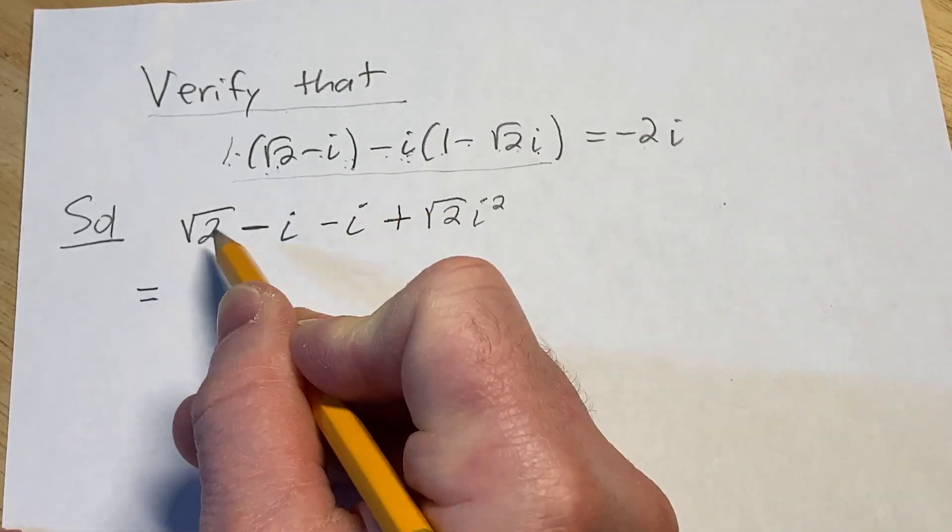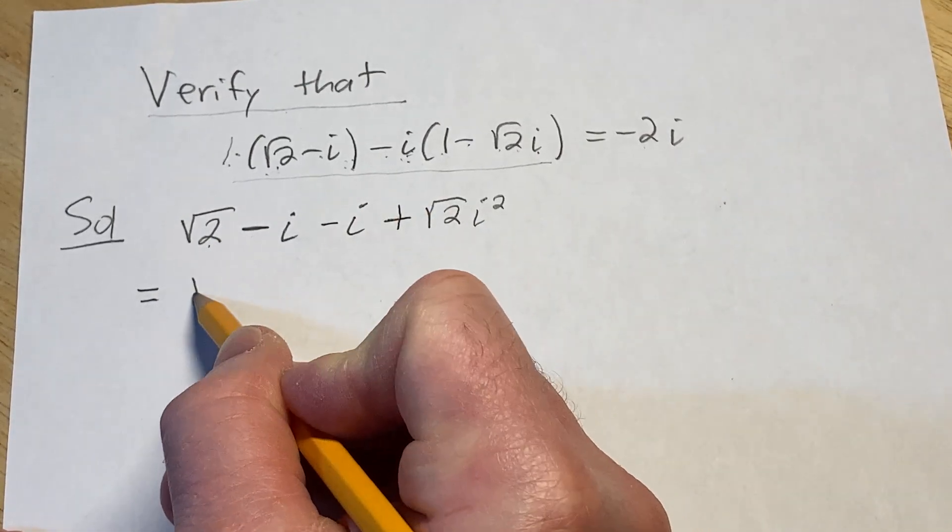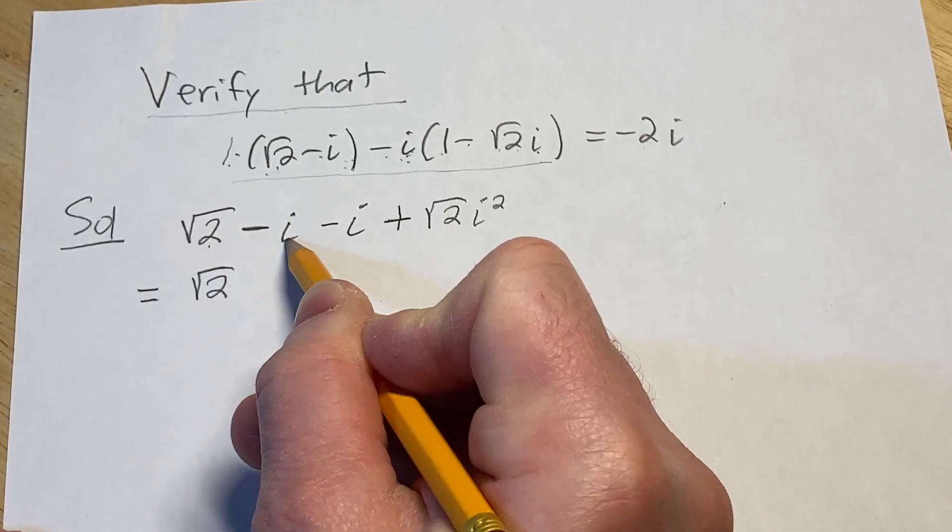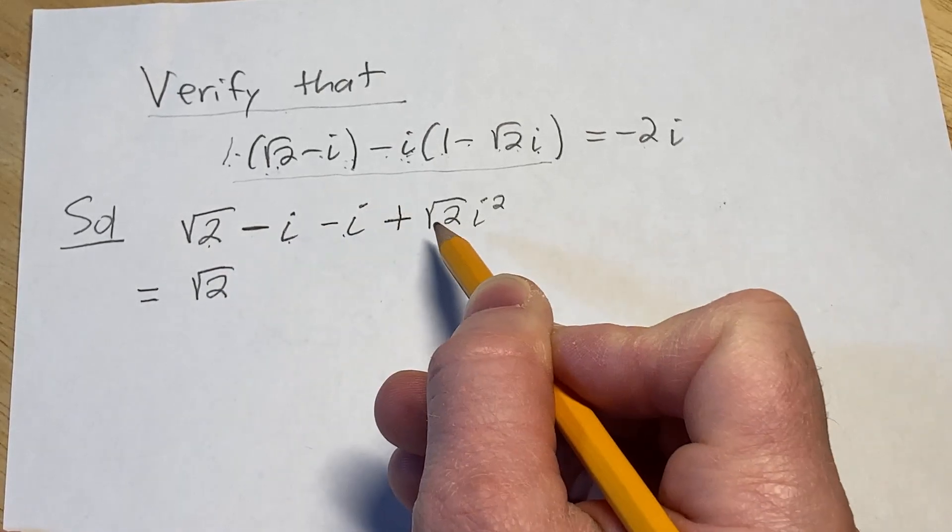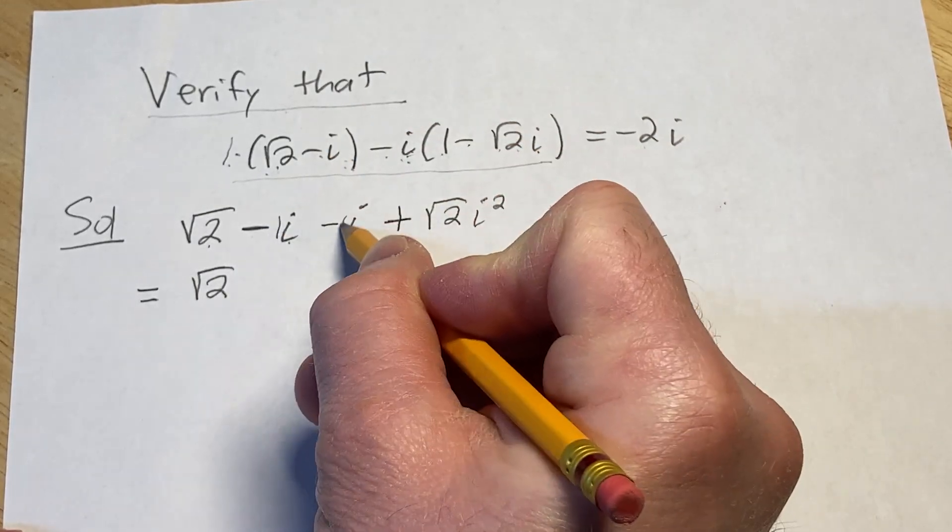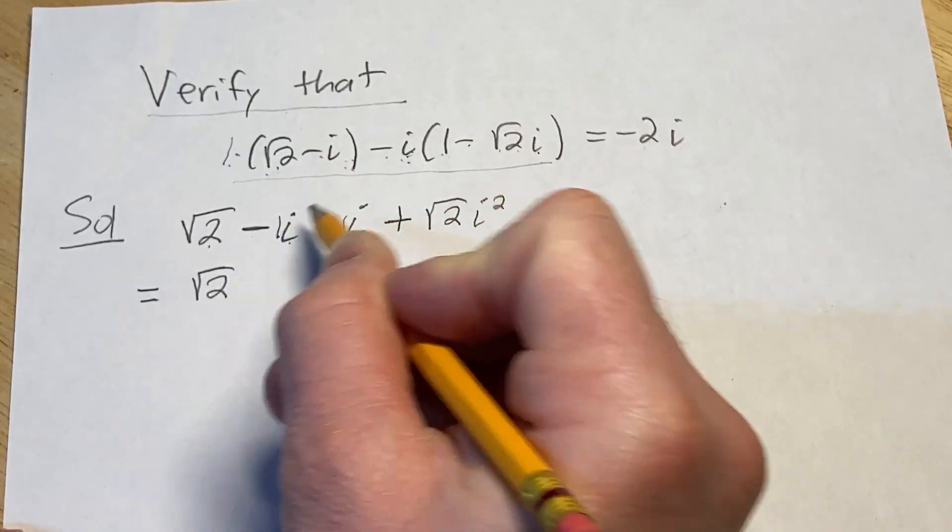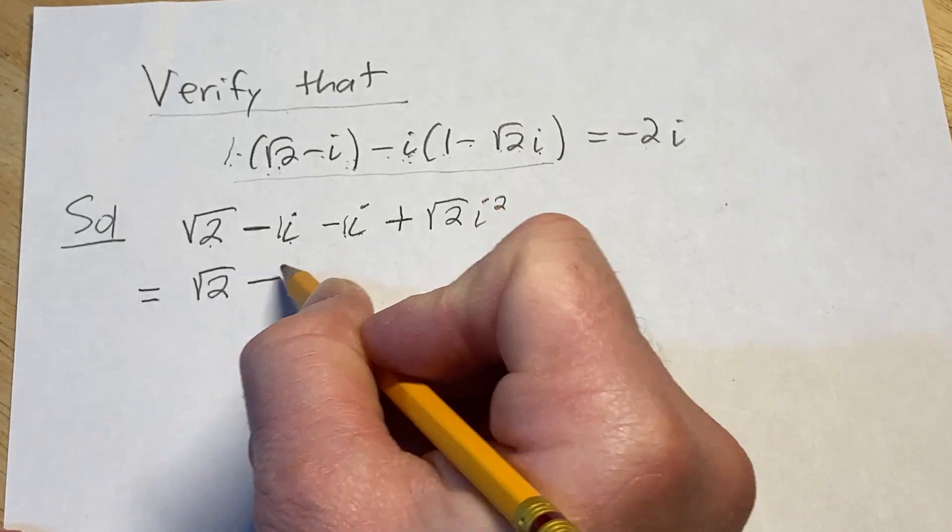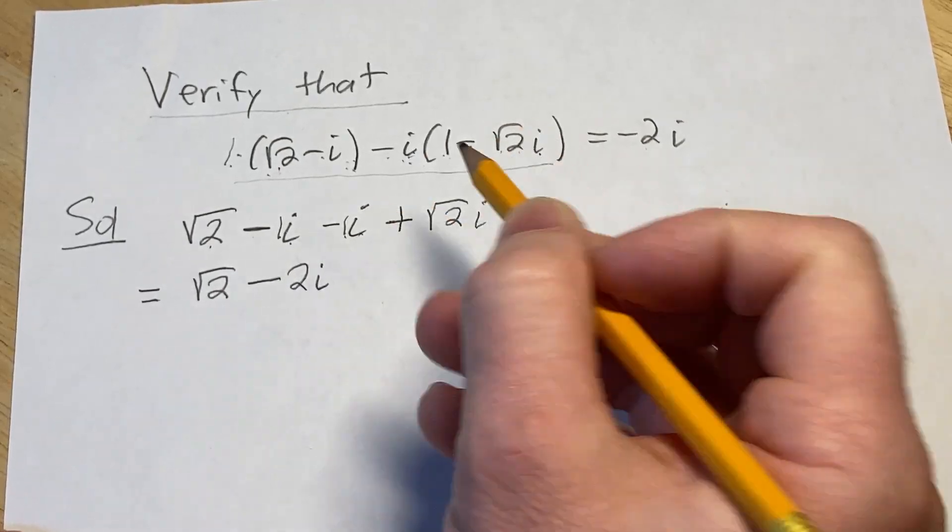So this is equal to, let's go ahead and bring down this square root of 2. Minus i minus i is minus 2i. The way to think about this is there's a 1 here and there's a 1 here. So if you have minus 1 of these, minus another 1 of these, you get minus 2 of these. So minus 2i.